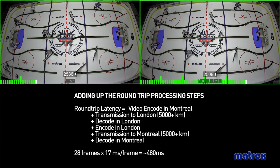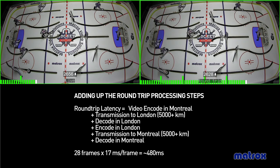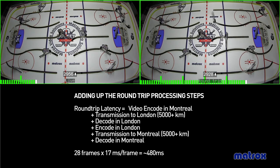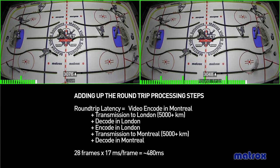But if we take a look at the math associated with that, we can certainly see that there's a lot of steps—both encode and decode, 5,000 kilometers of transport to and from London.